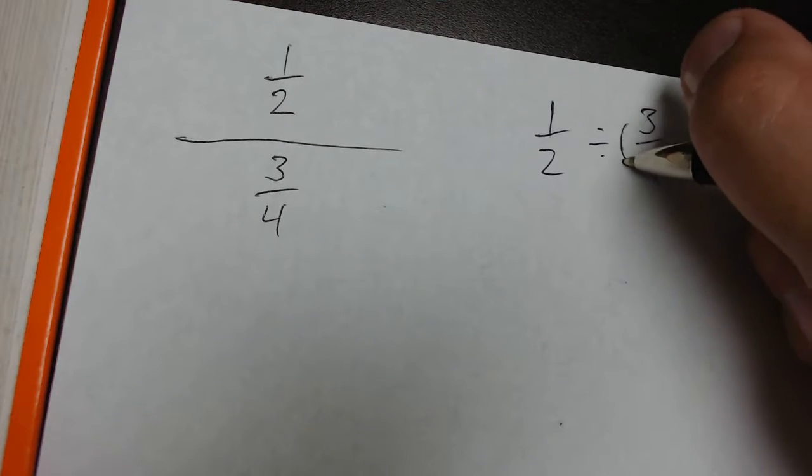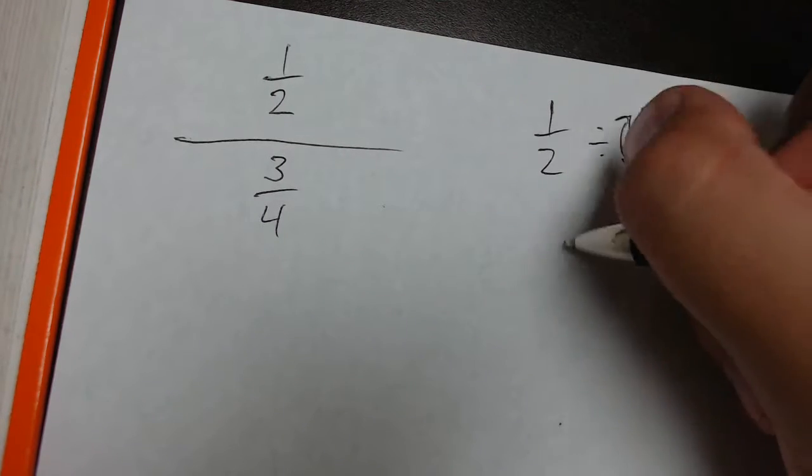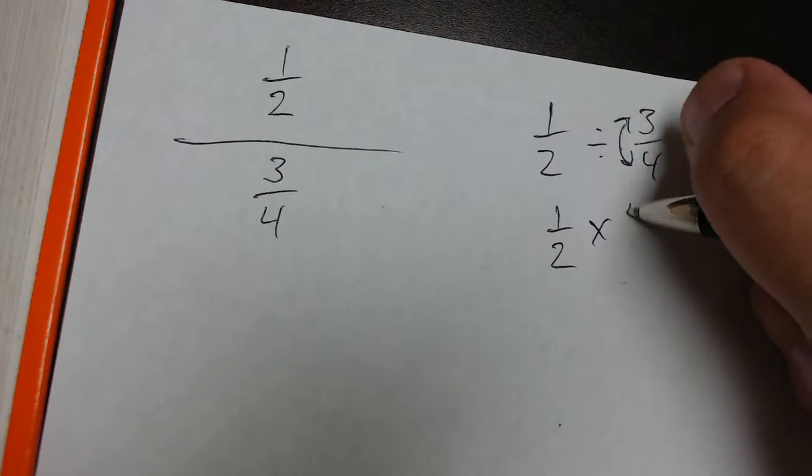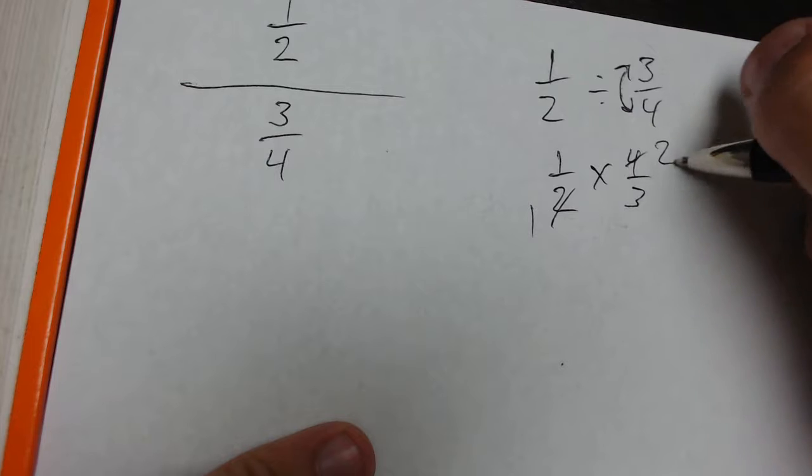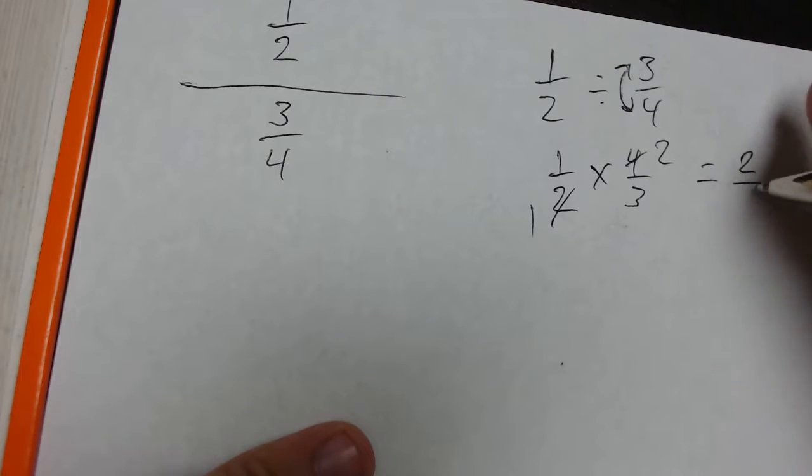So to follow our division rules, we would invert these and then multiply. So we would have 1 half times 4 over 3. From here I could cross-cancel and then my answer is just going to be 2 thirds.